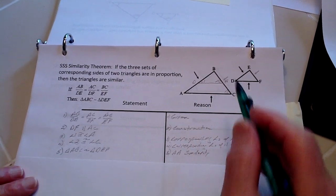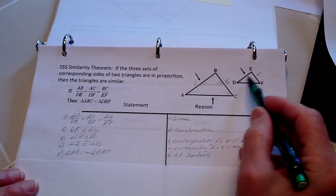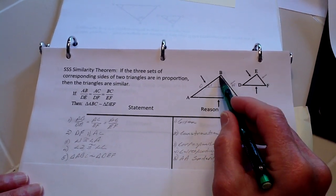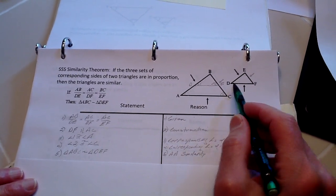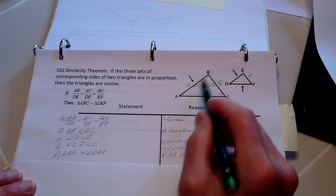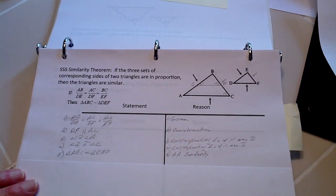And since these right here are the same, then therefore this angle and this angle have to be the same. And therefore this triangle and the larger triangle are similar. Thank you.